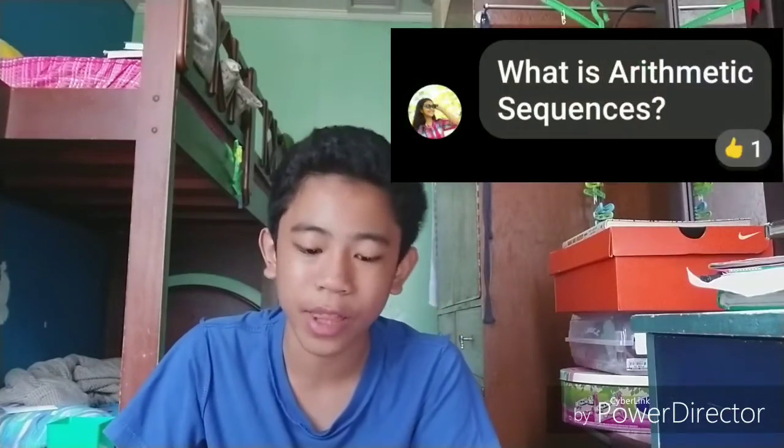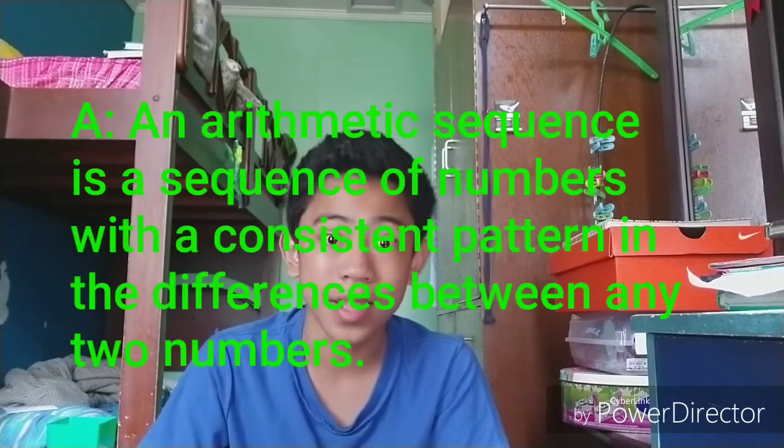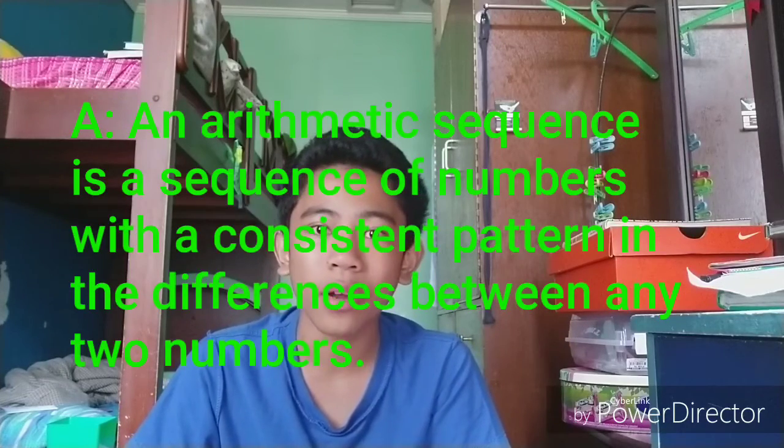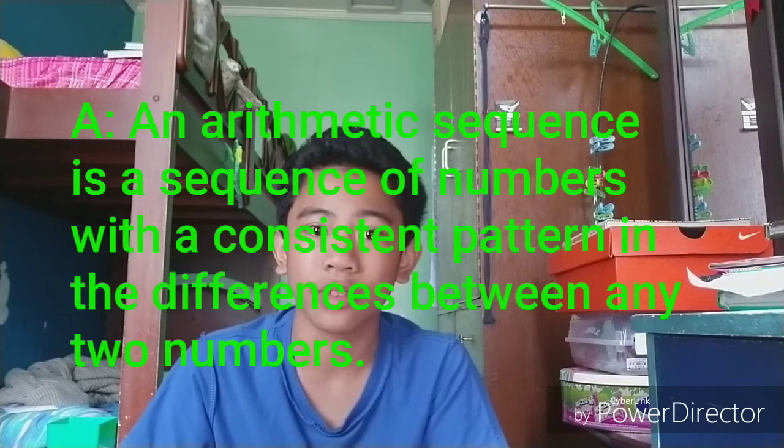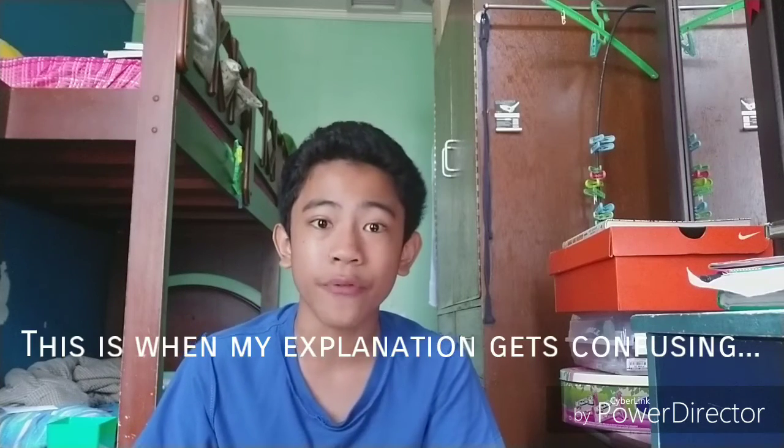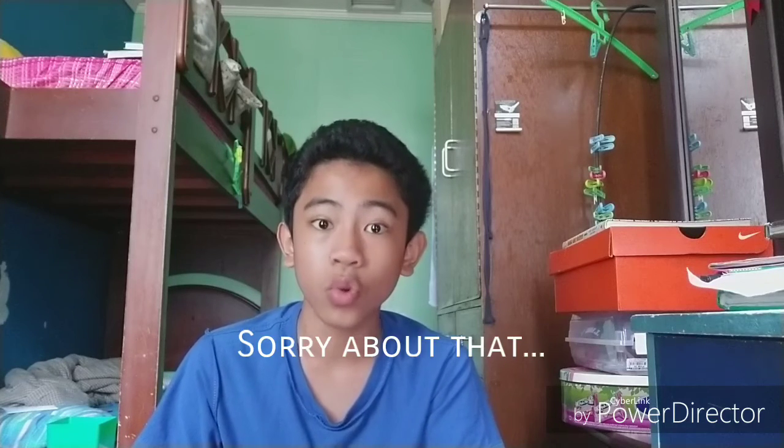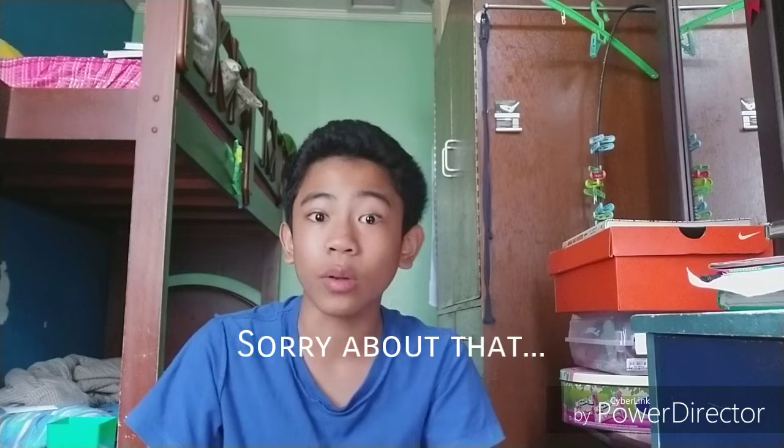And our final question for today is what is an arithmetic sequence? So basically an arithmetic sequence is a sequence of numbers where they've got a consistent pattern to them. Some examples that you may already know by now are the set of odd numbers and even numbers. Since they go up by 2 every single time, the difference of 2 between any 2 numbers is consistent throughout the entire set. And that is it.